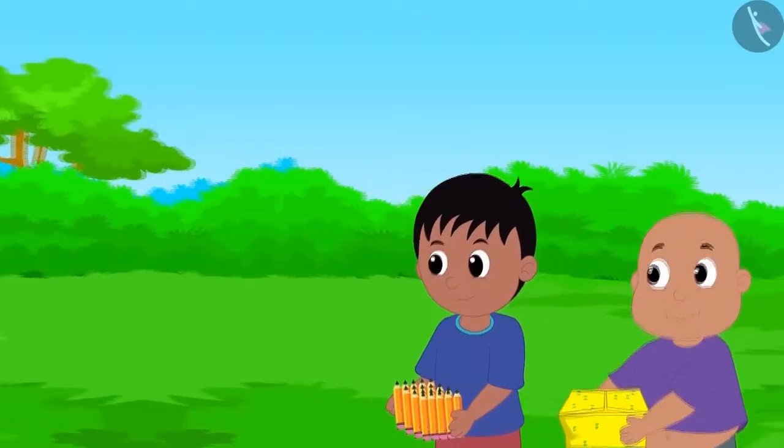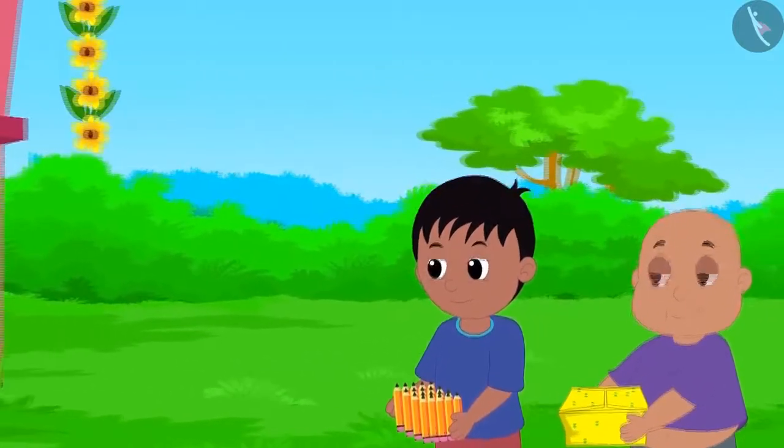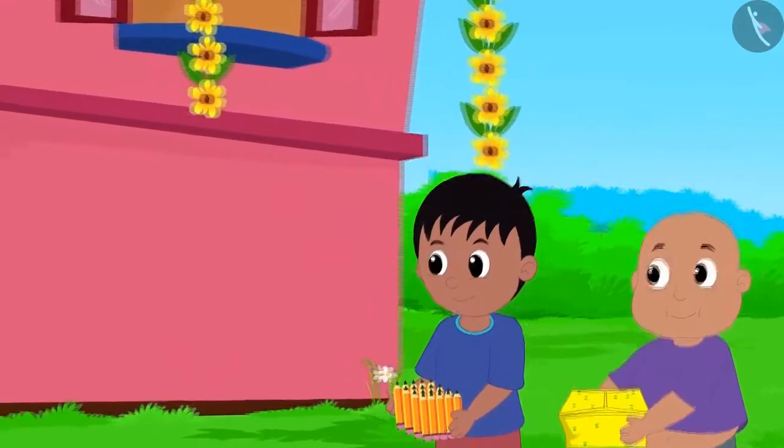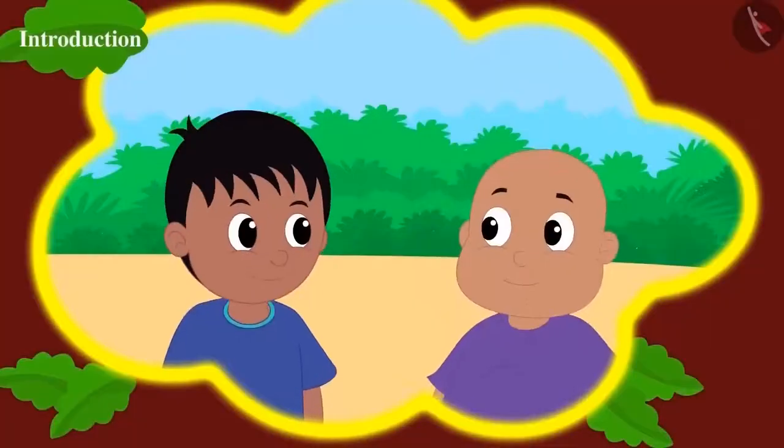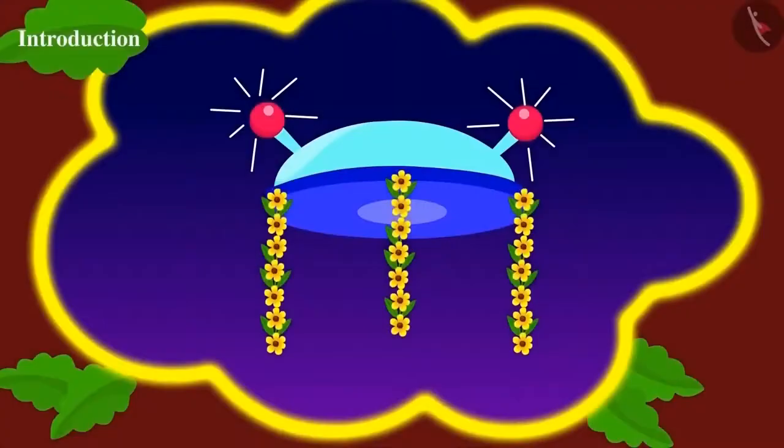When Raju and Bablu reached home with all the things, they saw that their house was decorated with beautiful festoons. They thought, why not buy some festoons to decorate Jeev's flying saucer as well?